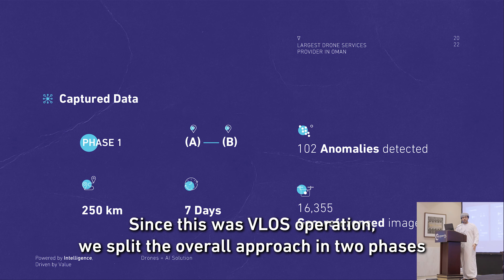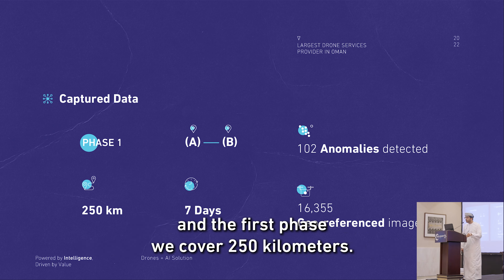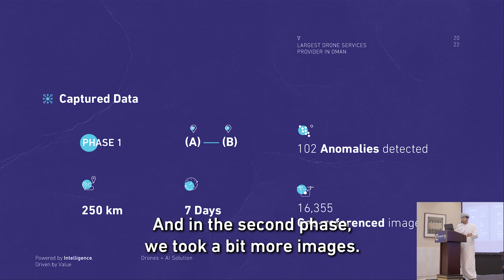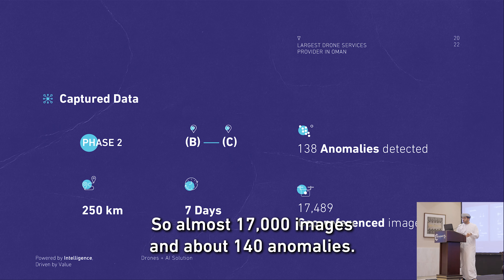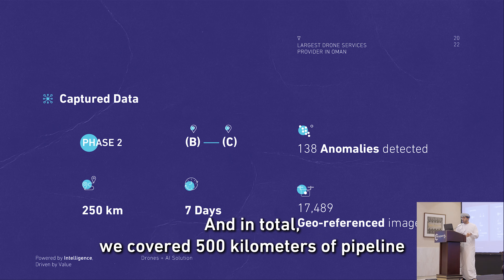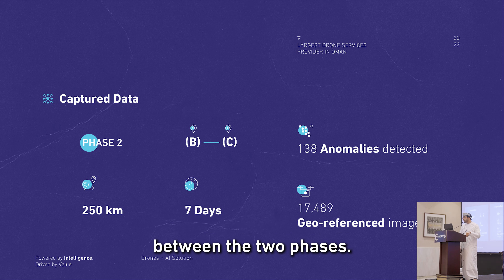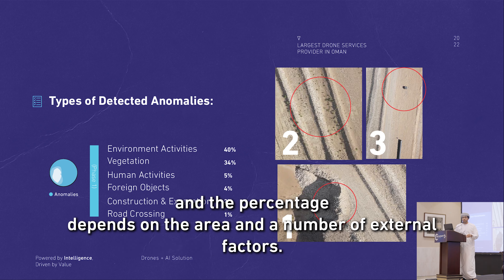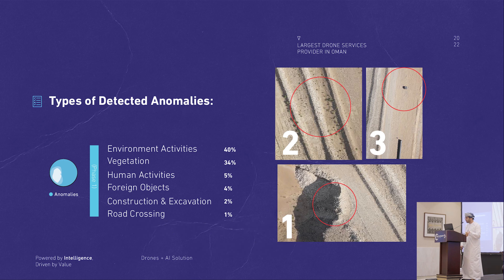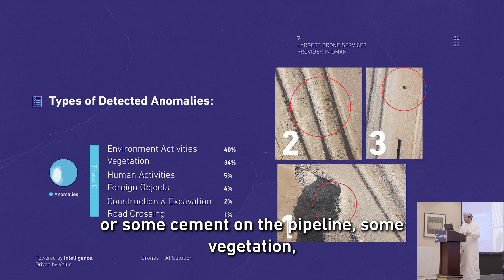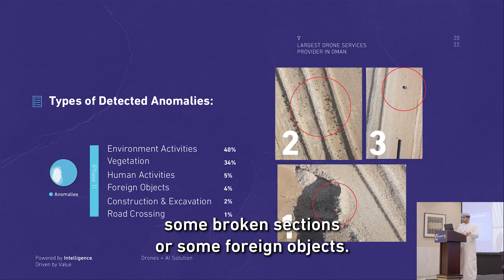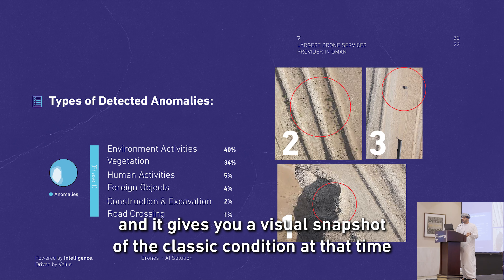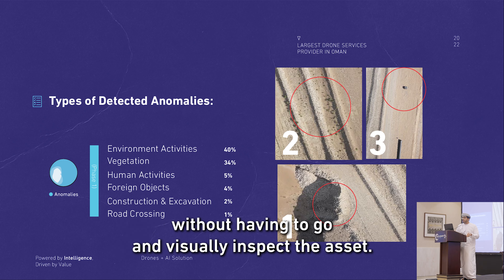We also coupled the drones with a PPK sensor to ensure geo-accuracy of the collected data within a reasonable extent. Since this was a BVLOS operation, we split the approach into two phases. In phase one, we covered 250 kilometers over around seven days, collecting more than 1,600 images and spotting a few anomalies. In phase two, we captured almost 17,000 images and detected about 140 anomalies. In total, we covered 500 kilometers of pipeline across both phases. Anomaly types detected include waste or cement on the pipeline, vegetation, broken sections, and foreign objects.